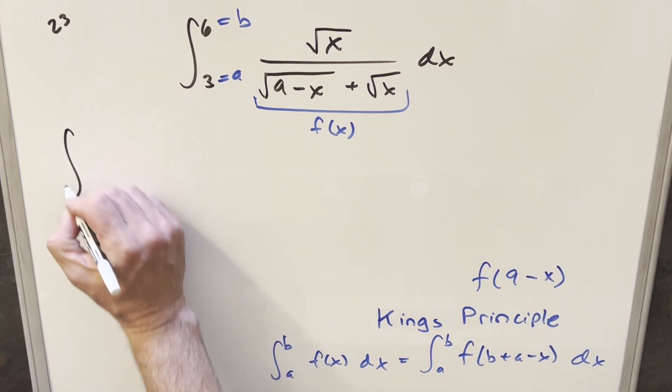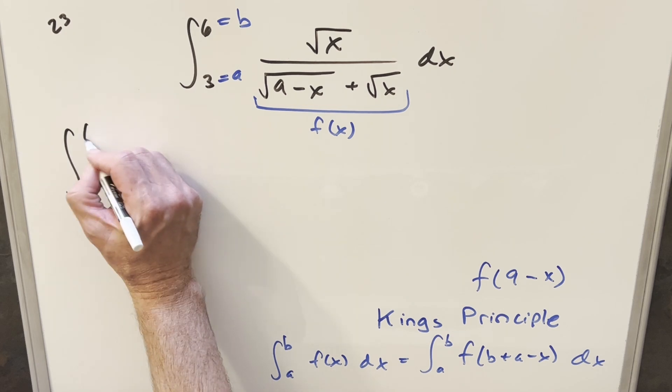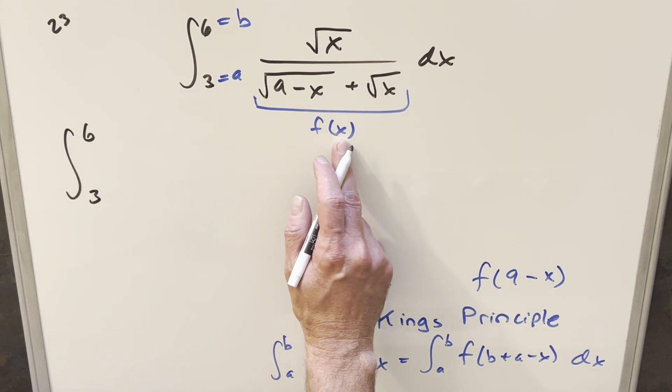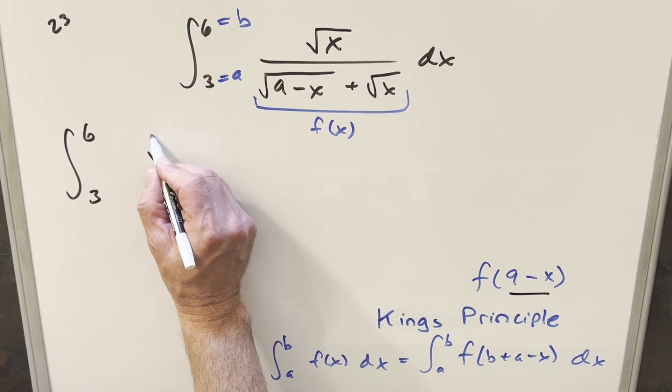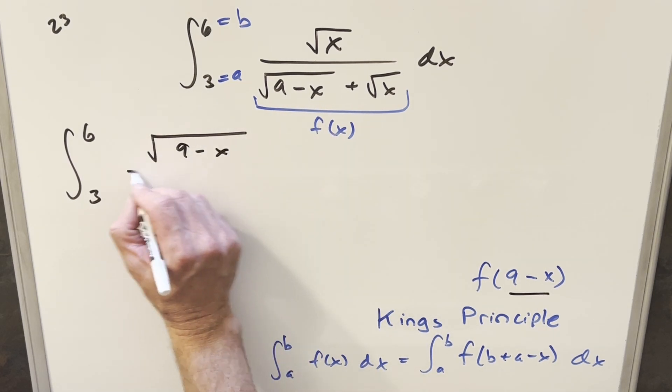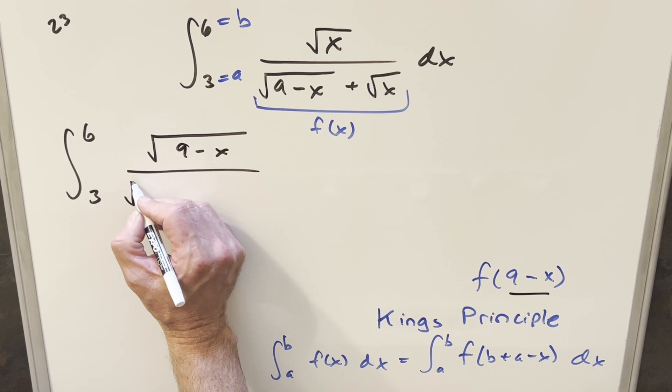So we'll go ahead and rewrite this. Updating it with this, we're going to have, this is going to be going three to six. And then here everywhere for x, we want to plug in nine minus x. So in the numerator we're going to have just nine minus x. Then here, let's do this one kind of carefully.